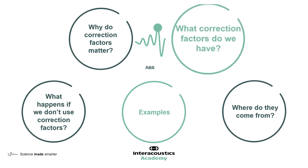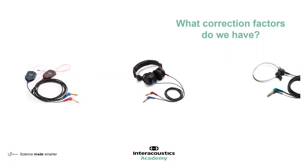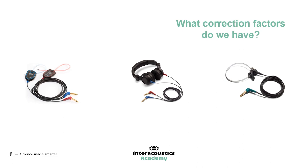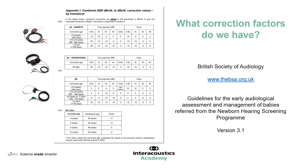So what correction factors do we have available? If we go beyond the evoked potential system itself, a step further down the line, is the transducers that are used to deliver stimuli to our babies. These different transducers each need their own correction factors, because they deliver that stimuli in different ways. Many people refer to the British Society of Audiology guidelines — a freely available document which has comprehensive correction factors available for ABR testing, provided by transducer and in age brackets.